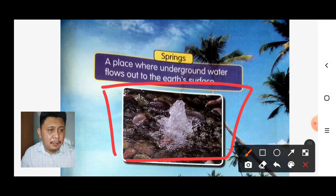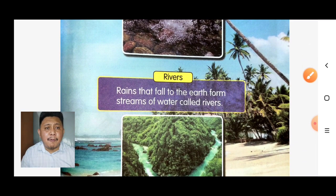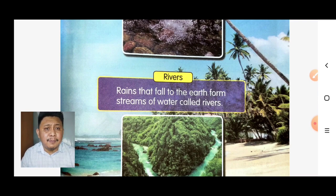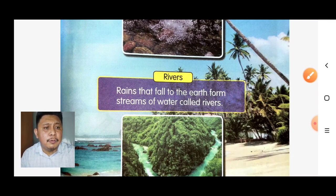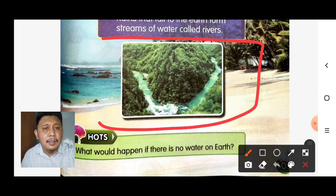Number five: rivers. What is a river? A river is formed when rain falls to the earth and forms a stream of water called a river. Here is our river.